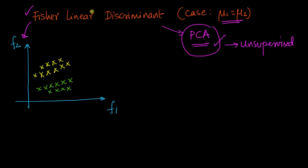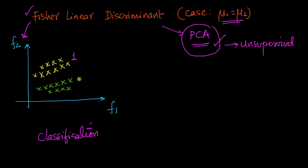Fisher-Linear Discriminant is an idea very similar to PCA, but in the context of classification. Here we have a supervised setting — this is not about dimensionality reduction. Fisher-Linear Discriminant is all about a classification task. I'll explain this simply using a two-dimensional example. Imagine I have feature 1 and feature 2. Let's assume I have two classes — all the yellow points are class 1, and all the green points are class 2. Our objective is: can I come up with a hyperplane such that when I project these points onto it, they are well separated? That's the whole objective.